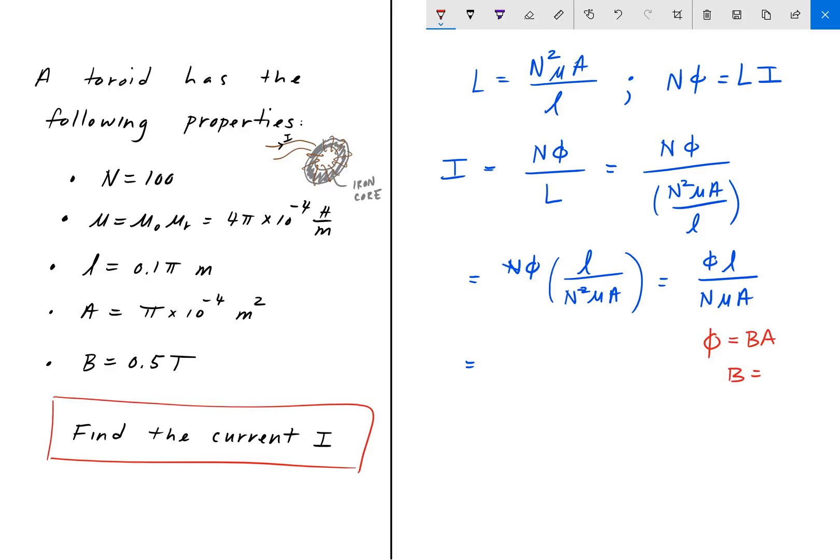From here we know that flux is equal to the magnetic field times area. And so that means that the magnetic field is equal to the flux divided by area, which is this quantity here.